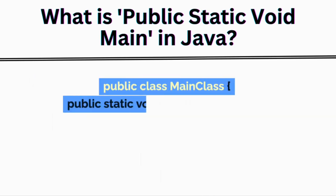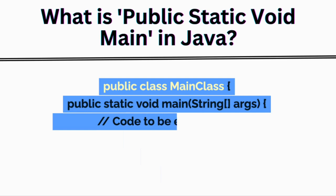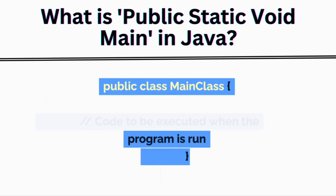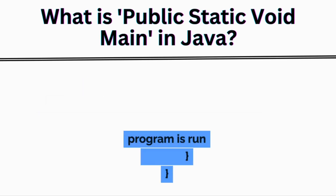Public class main class, public static void main string args, slash slash code to be executed when the program is run.